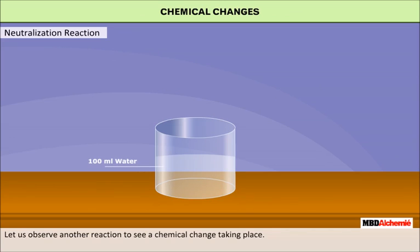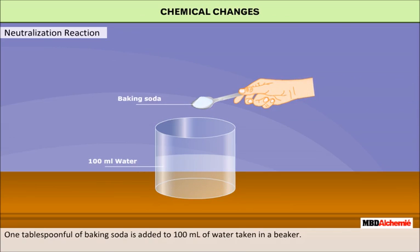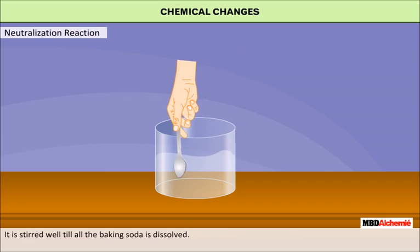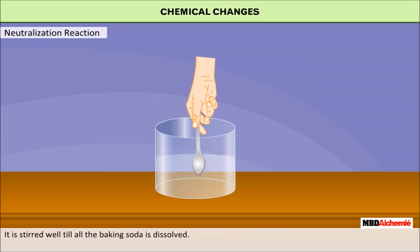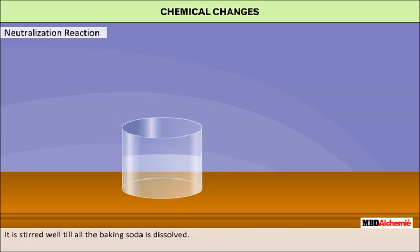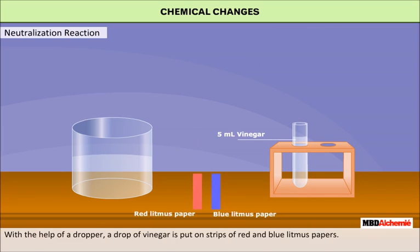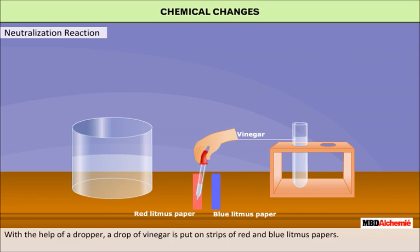One tablespoon of baking soda is added into 100 ml of water in a beaker and stirred well until all the baking soda is dissolved. Five ml of vinegar is then taken in a test tube. With the help of a dropper, a drop of vinegar is put on a strip of red and blue litmus paper.